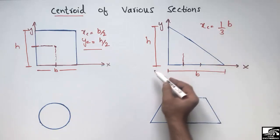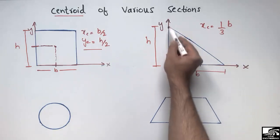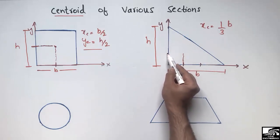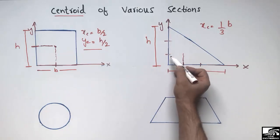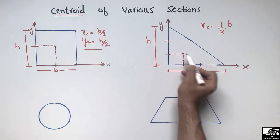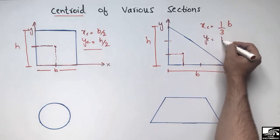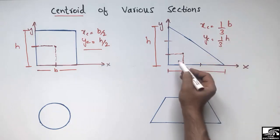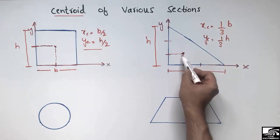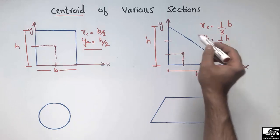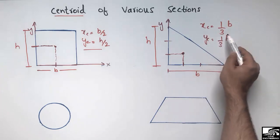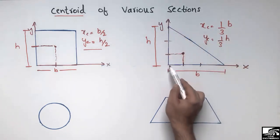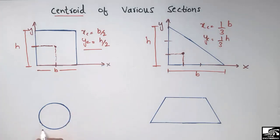Similarly, along the y-axis, if the height of the triangle is H and I divide it into three equal parts, the centroid along the y-axis is one-third of H, i.e., H/3. So the centroid of the triangle is at (B/3, H/3), meaning the whole system is in balance at this point which is one-third from the base along both axes.